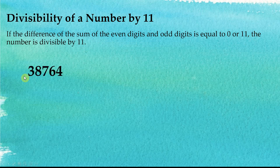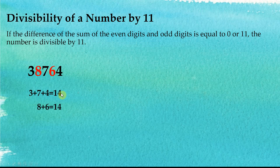For example, take the number 38764. The digits 3, 7, and 4 are the odd-positioned digits and 8 and 6 are the even-positioned digits. The sum of the odd digits is 14 and the sum of the even digits is also 14, and therefore the difference is equal to 0. Since the difference is 0, this number is divisible by 11.